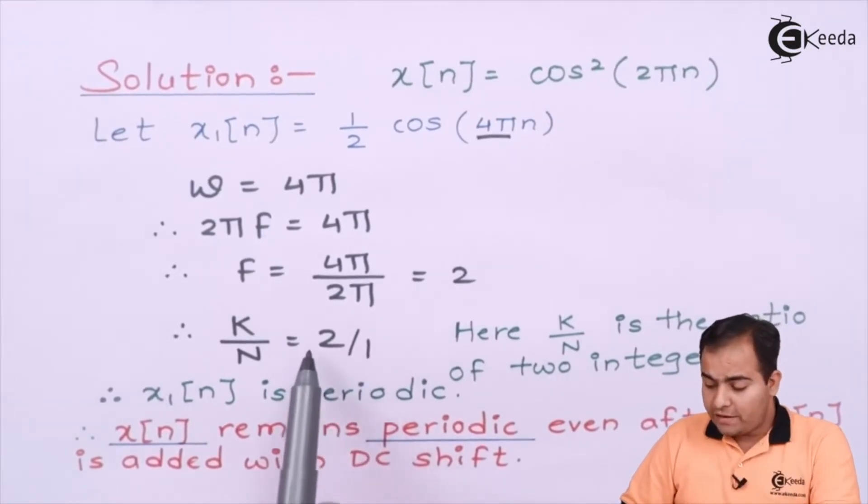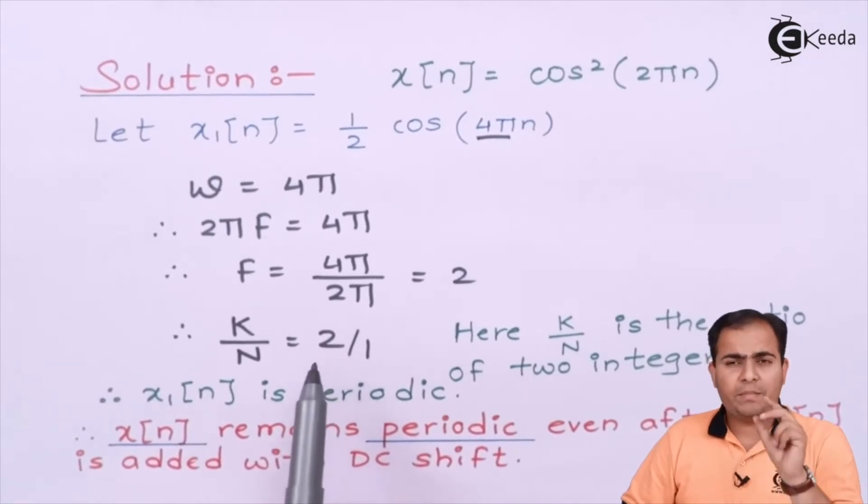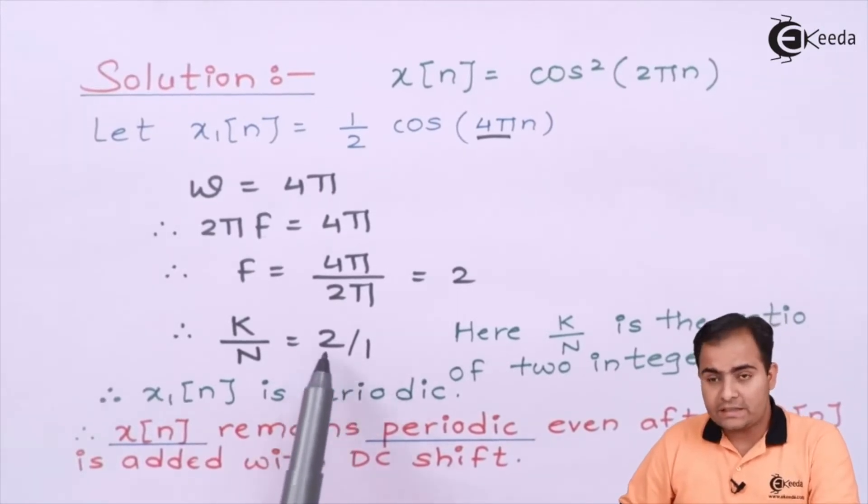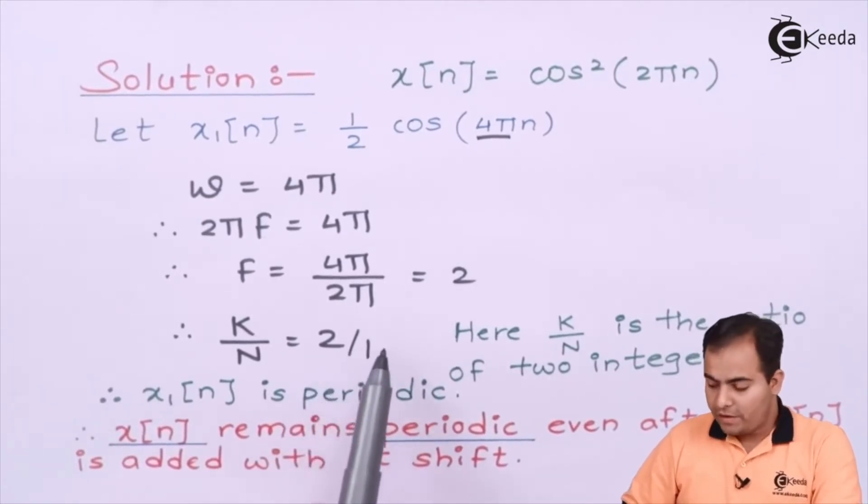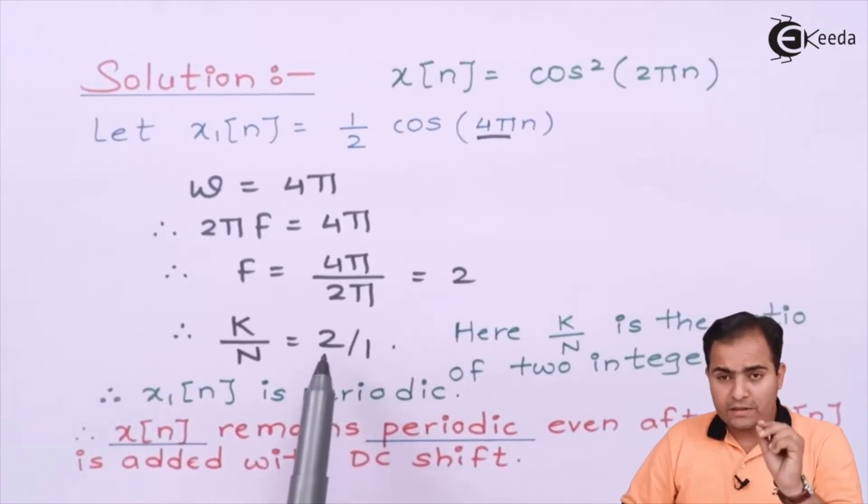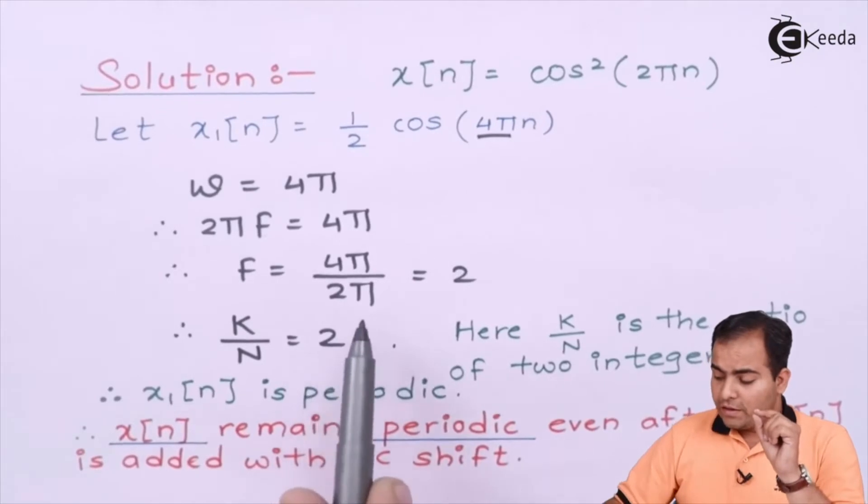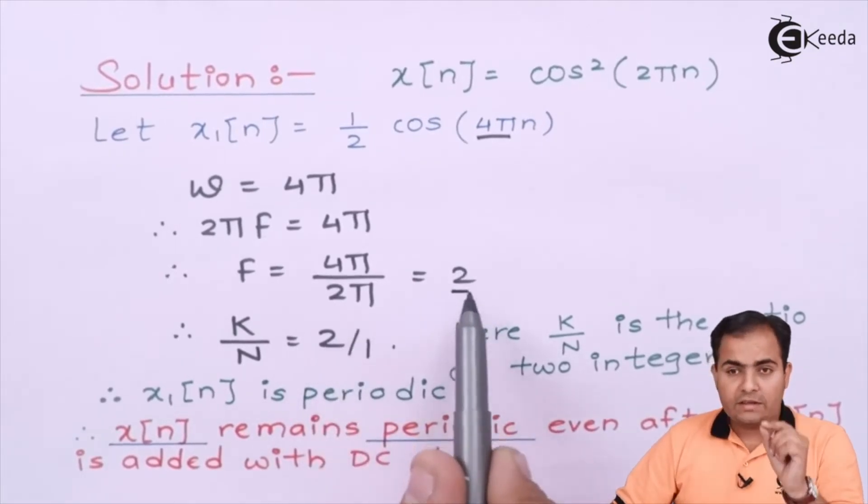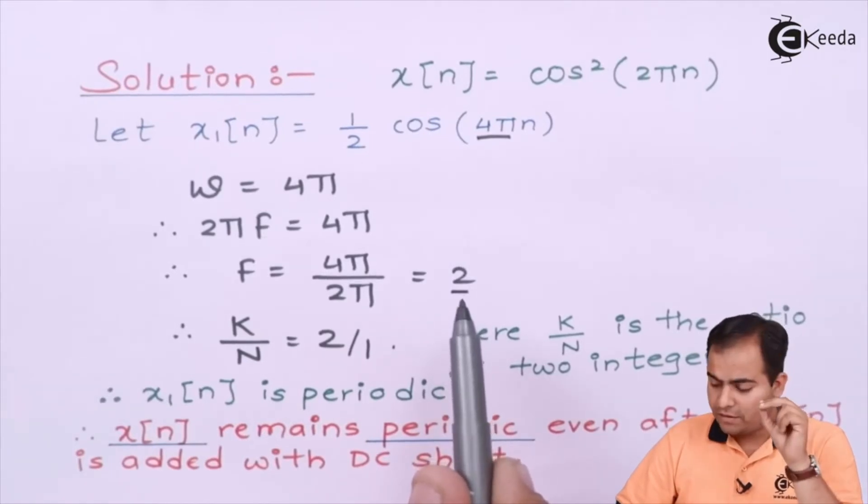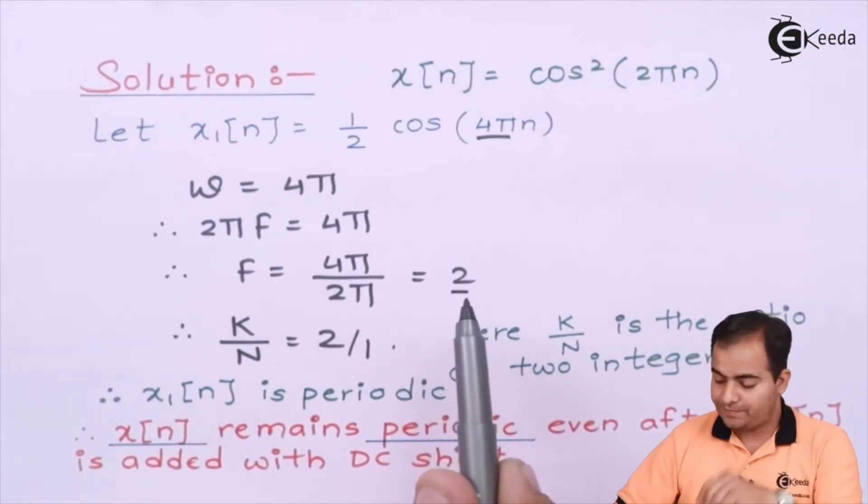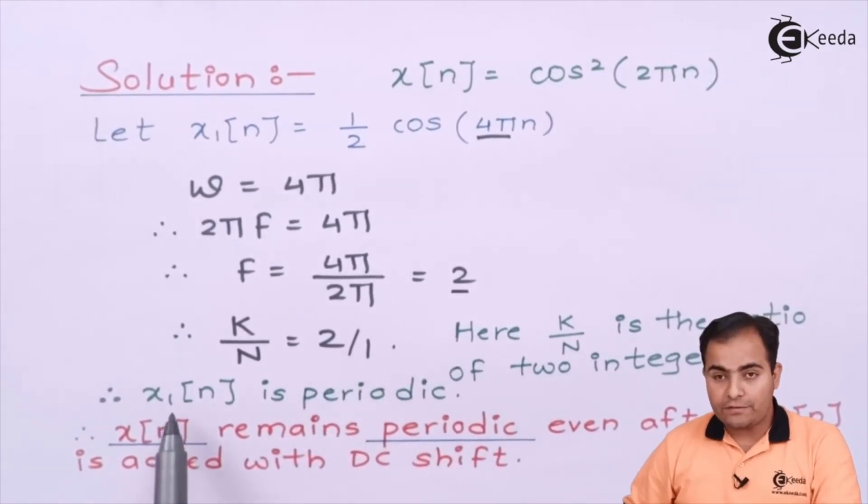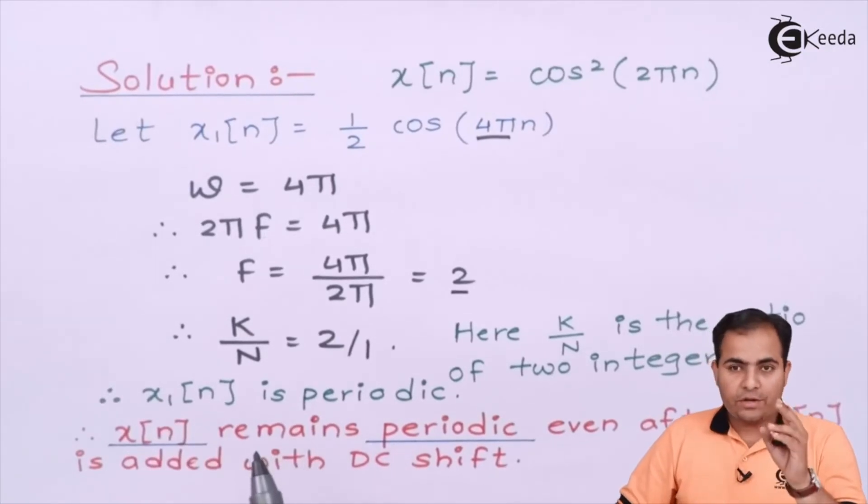Now look here. The value 2 is perfectly rational, or you can say a perfect combination of 2 integers. If you divide it by 1 it is fine. Just one thing is necessary: whatever result will come, this result should always have the value of 2 integers or the value must be perfectly rational. In this case, 2/1 is a rational number, then you can say that x₁[n] is periodic.